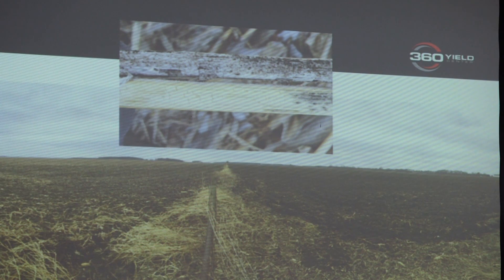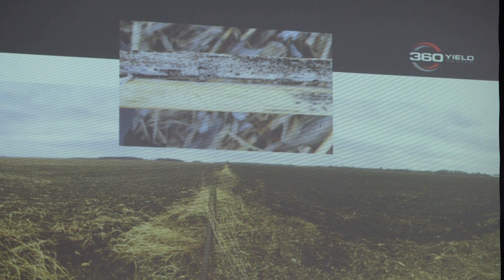The second difference is canopy. At waist-tall to shoulder-tall corn we're just starting to form canopy closure, and where we don't have canopy closure — between the rows — light rays strike the soil surface, creating warmer temperatures that increase volatilization. Nitrogen applied 15 inches away is in that exposed zone, while nitrogen placed right next to the plant benefits from canopy closure and cooler soils, reducing loss potential.